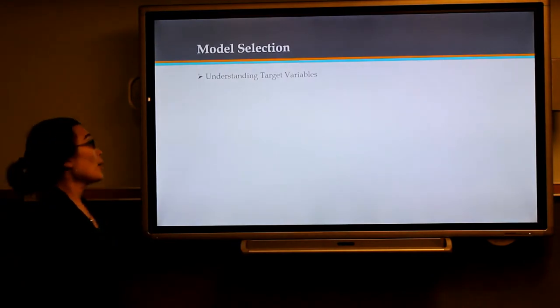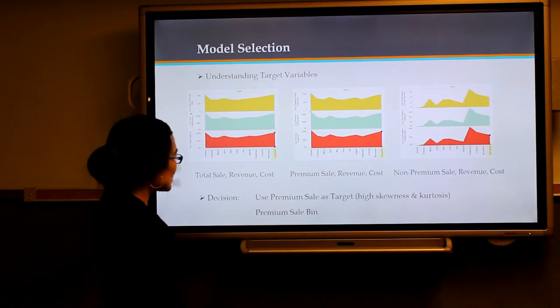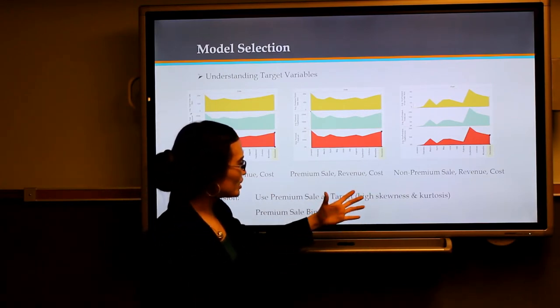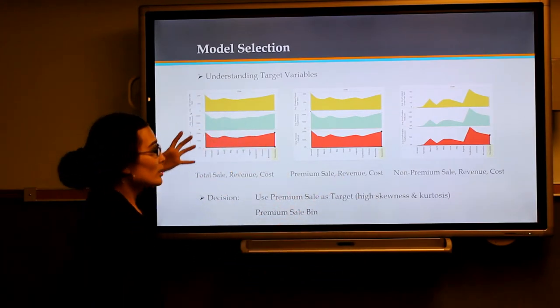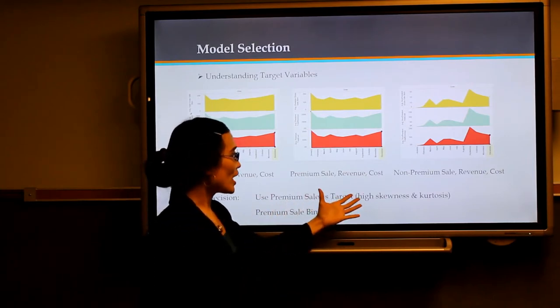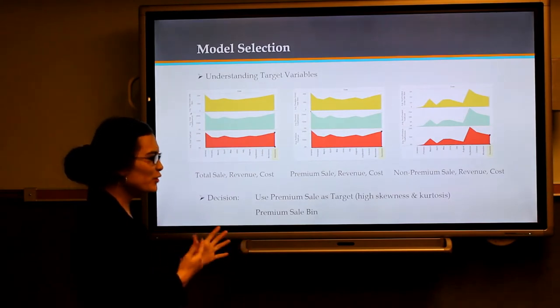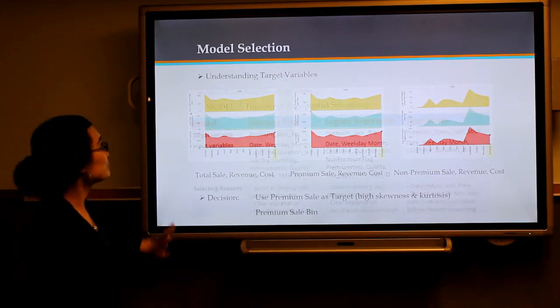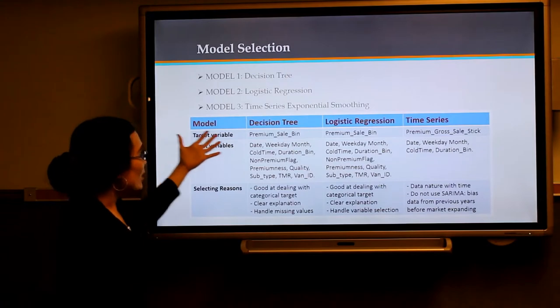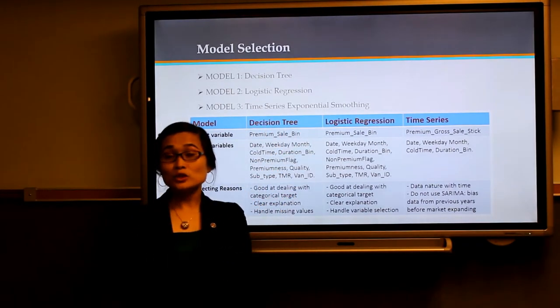For model selection, we understand that our data set has a lot to do with sale revenue and cost. The contribution of non-premium sale into total sale is not so much. We decide to use premium sale as target variable, which has very high skewness and kurtosis. We group it together to reduce these issues and create a new variable of premium sale bin. Finally, we come up with three different models: decision tree and logistic regression with target variable as categorical premium sale, and time series exponential smoothing using target variable as absolute value of premium sale.